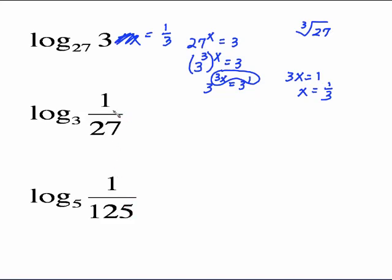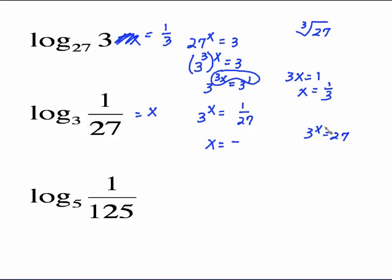Now these are different — we're creating fractions. Set up equals x: 3 to the x equals 1 over 27. The only kind of power you put on a whole number to make it a fraction is a negative power, so x will be negative something. Look at 3 and 27: what power on 3 makes 27? That's 3 cubed. So x equals negative 3. Log base 3 of 1 over 27 equals negative 3 because 3 to the negative 3rd power equals 1 over 27.